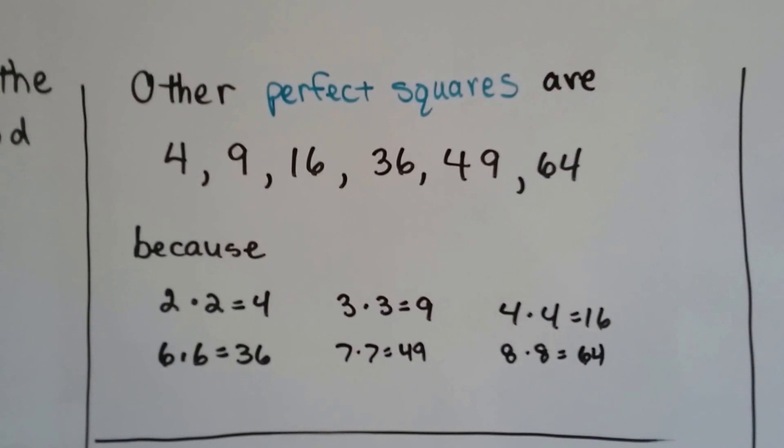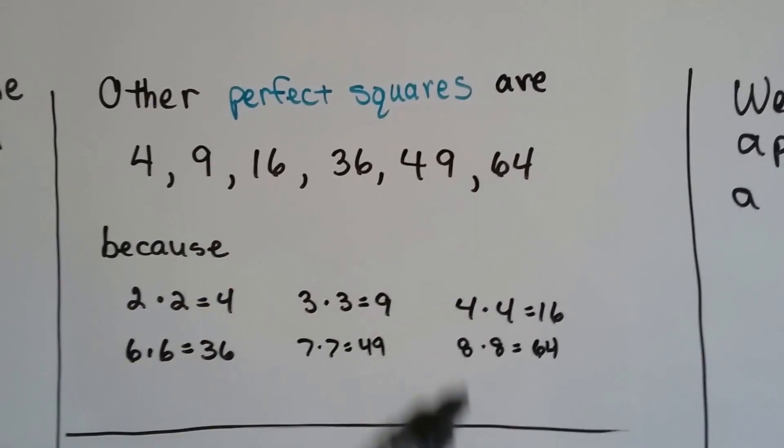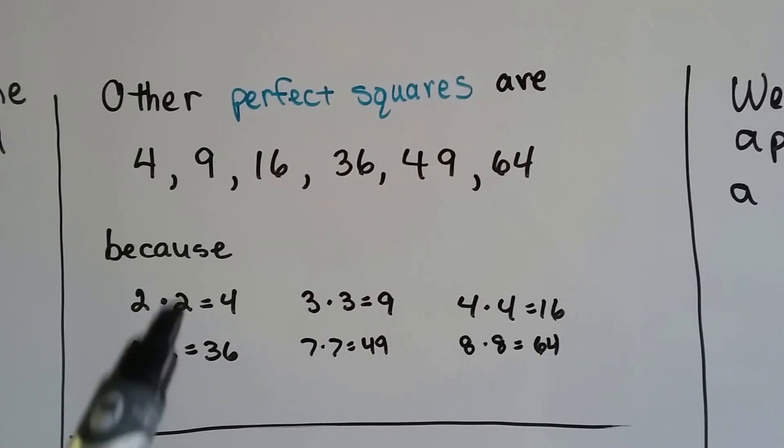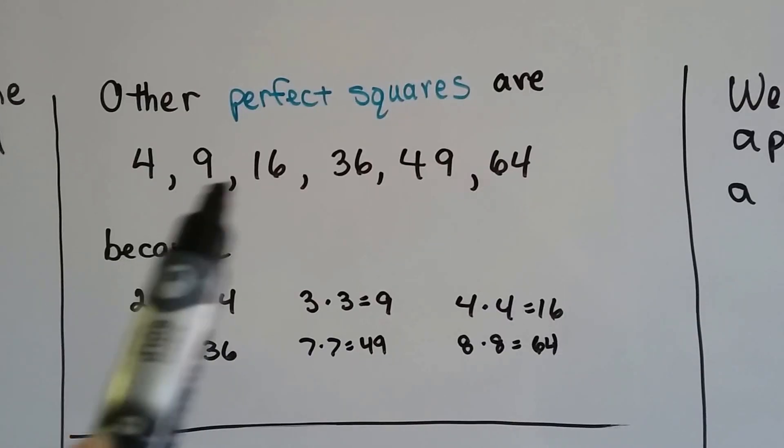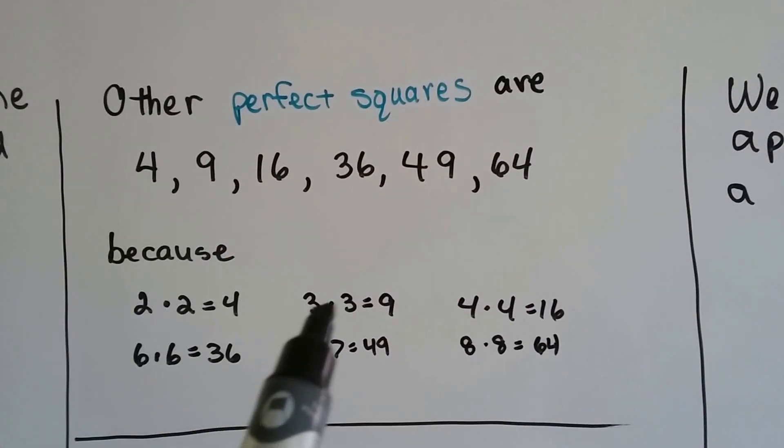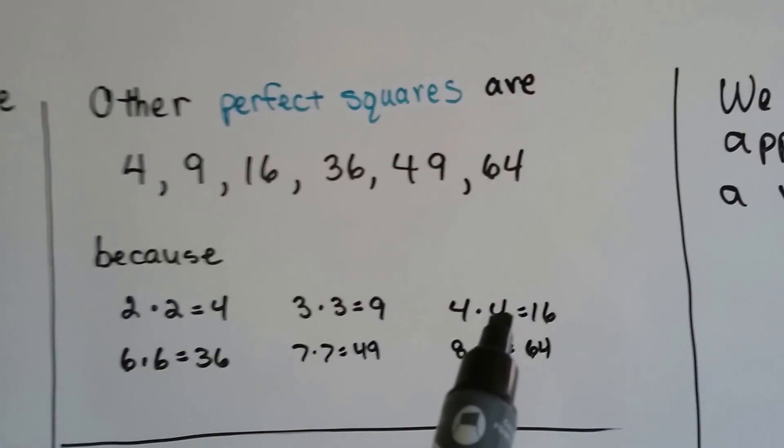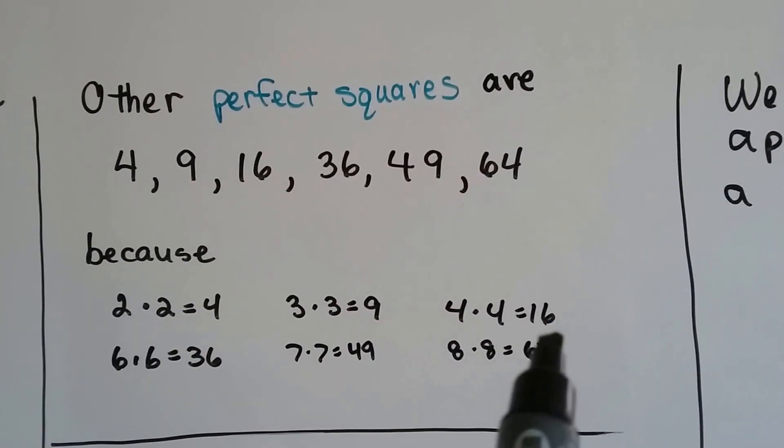We also discussed that perfect squares are 4, 9, 16, 36, 49, 64, because when you multiply a number to itself it makes these perfect squares. 2 times 2 is 4, 3 multiplied to itself is 9, 4 multiplied to itself is 16, and so on.